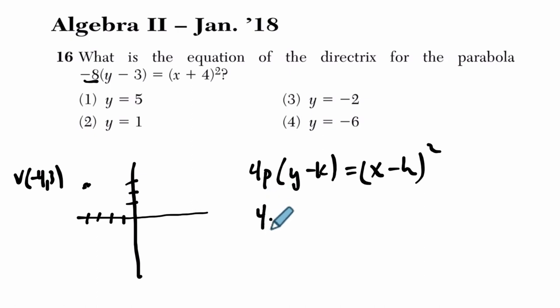4p, well, 4p equals negative 8. So solve for p. p is equal to negative 2.